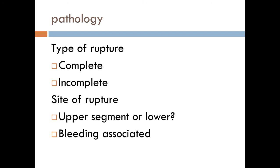If rupture occurs at the site of a scar, it most commonly occurs at an upper uterine segment scar because it is a much weaker scar — the upper segment is very thick so coaptation and wound healing is poor, it is highly vascular so hemostasis is imperfect, it is susceptible to infection, and it is an active segment that contracts and relaxes, not allowing enough time for the wound to heal. In contrast, the lower segment is thin with better coaptation, less vascular, less susceptible to infection, and is a passive segment with enough time for wound healing.